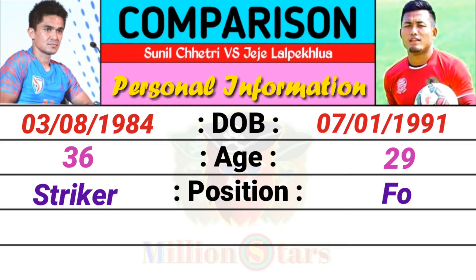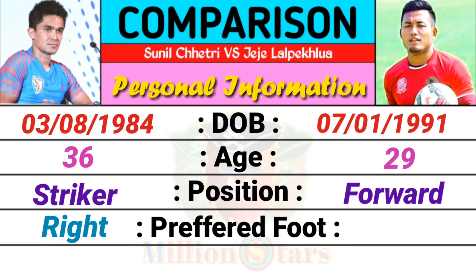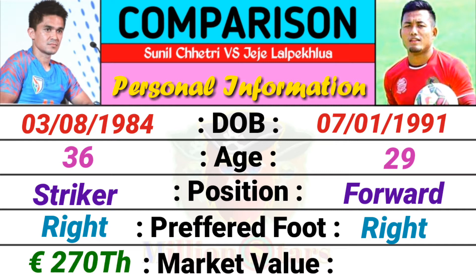Preferred foot: Sunil is right, JJ is right. Market value: Sunil is 270,000 euro, JJ is 90,000 euro.